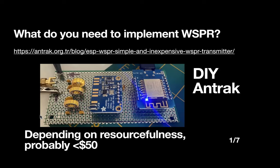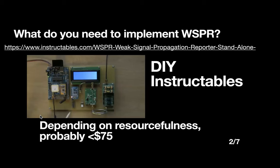This is a ham club over in Turkey — Antrak, not Amtrak the railroad. They had various projects they'd been working on, and they recommissioned those parts onto a breadboard to create this project. They estimated if you bought those parts new, it'd be a little bit less than $50. There's also a guy on Instructables who came up with a really good idea — if you bought all those parts brand new, it would be a little bit less than $75. You have to be a little bit resourceful, and you may have some parts in a scrap box that would help you out.